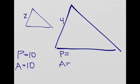Okay, well let's look at an example. So we have two similar triangles, one with side length 2 and one with side length 4. That means that x is equal to 2. Okay, and we're given that the perimeter of this one is equal to 10 and the area is equal to 10.